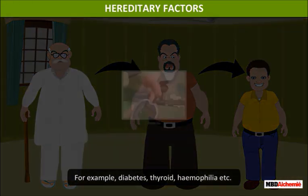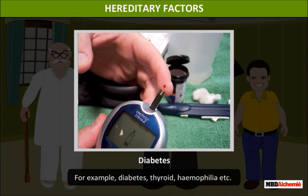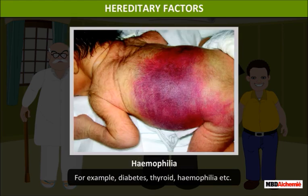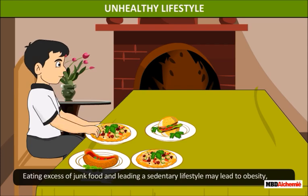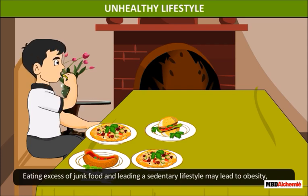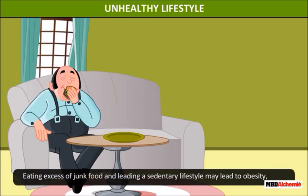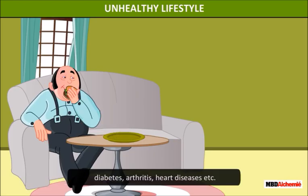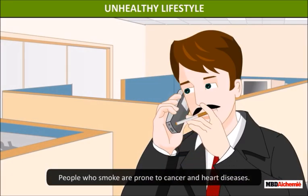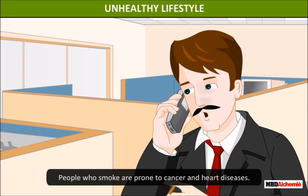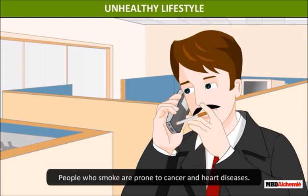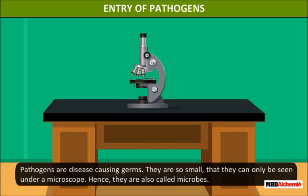Hereditary diseases are passed on from one generation to the next. For example, diabetes, thyroid, and hemophilia. Unhealthy lifestyle: eating excess junk food and leading a sedentary lifestyle may lead to obesity, diabetes, arthritis, and heart diseases. People who smoke are prone to cancer and heart diseases.